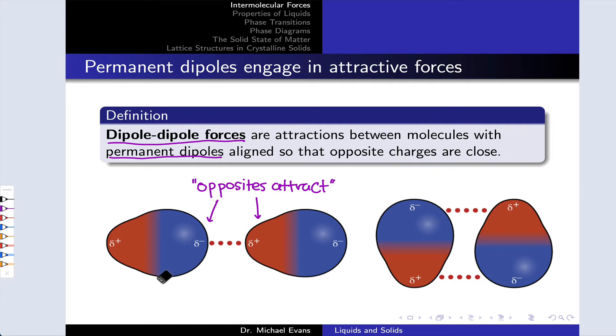Take a molecule with one positive end and one negative end. If that molecule finds itself nearby another molecule such that the positive end of the second molecule is nearby the negative end of the first, those oppositely charged regions will attract one another. This is known as a dipole-dipole force.